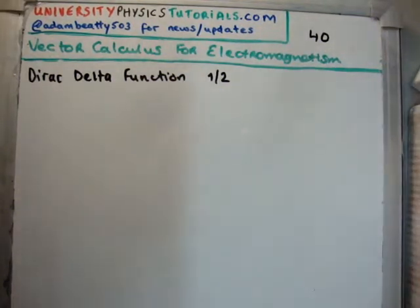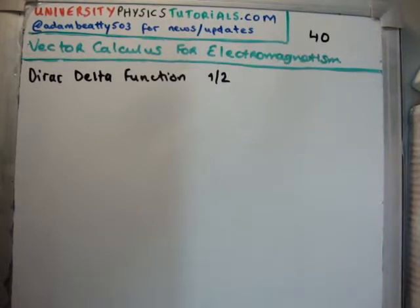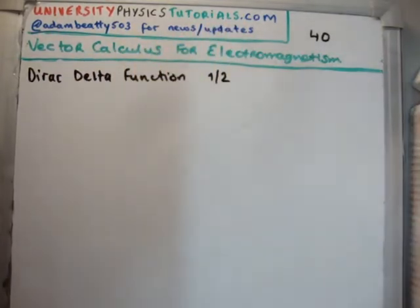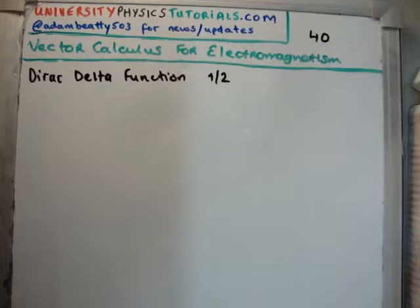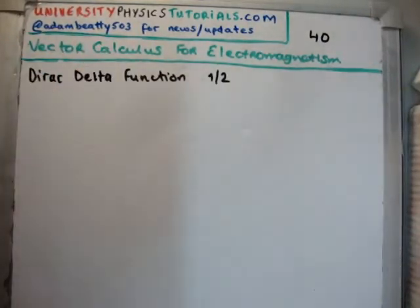In this video I'm going to continue on with my tutorial series on vector calculus for electromagnetism. This is video number 40 and I'm going to discuss part 1 of the Dirac delta function. I'd like to draw your attention to my website universityphysicstories.com, and if you'd like to find out news or updates on my posts you can follow me on Twitter at AdamBT503.